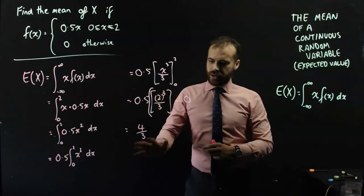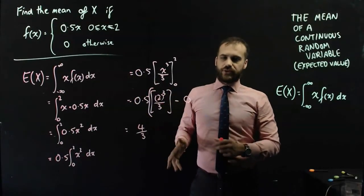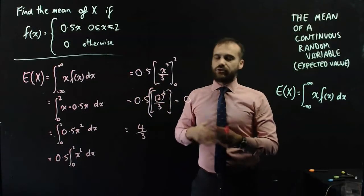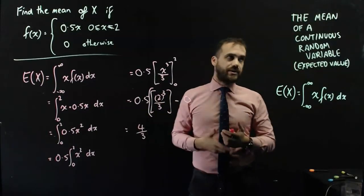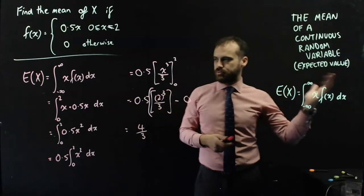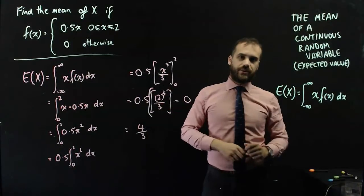Anything could happen between 0 and 2, but over the long term, 4 over 3 is what the average thing that happens will be. That's what we mean by mean or expected value, and here's how we do it.